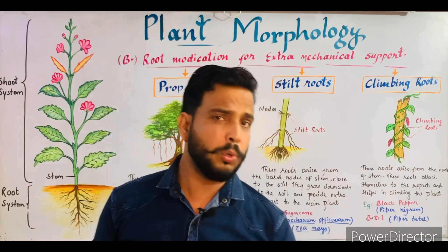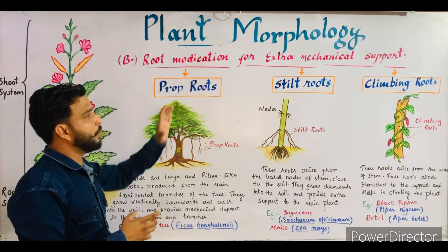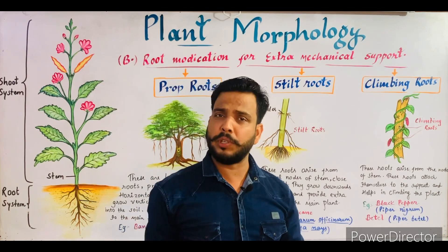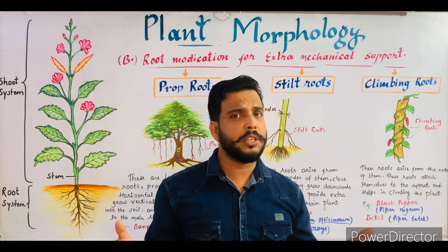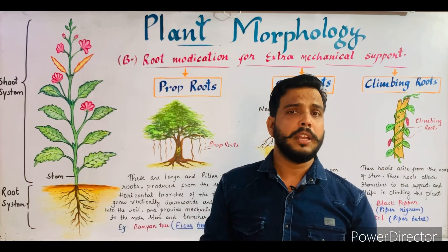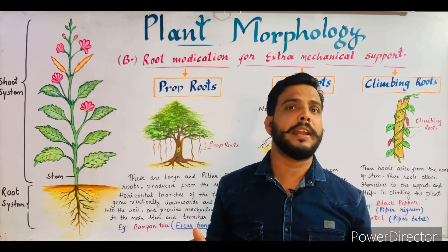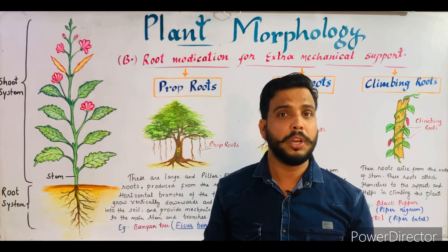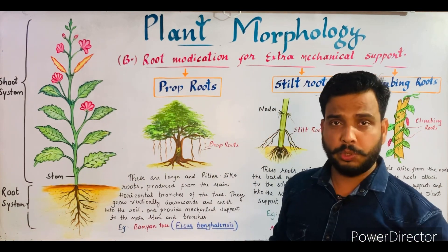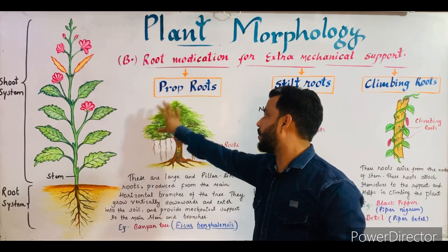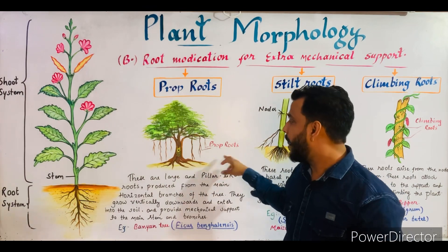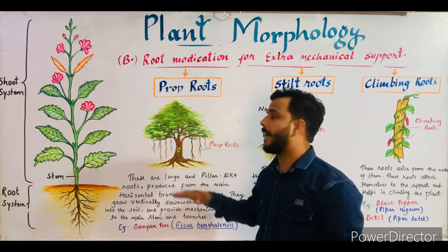The first one is the prop root. Prop roots are generally present in the Ficus tree or the Banyan tree. They arise from the horizontal branches of the tree and enter into the soil, thus giving a pillar-like appearance and providing extra support to the main plant. This type of root is known as prop roots. As you can see in this diagram, this is the Banyan tree and these roots are the prop roots — they are large and pillar-like.